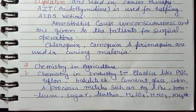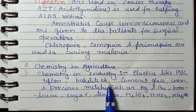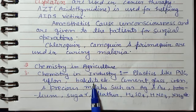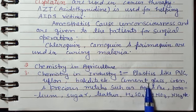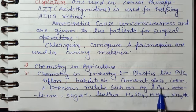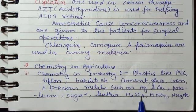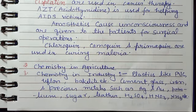Chemistry has a very large use in the field of industry — plastics like PVC (polyvinyl chloride), teflon, bakelite, etc. Bakelite is used in board switches. Cement, glass, iron, and precious metals such as silver and gold, petroleum, sugar, leather, H2SO4, HNO3, ammonia, etc. — all these things are manufactured in industry using chemistry.